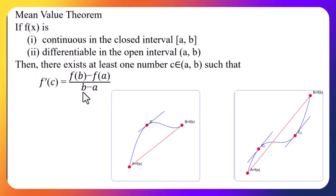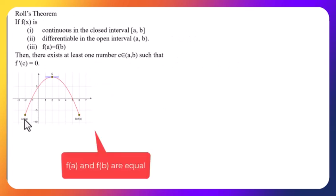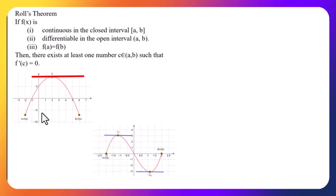Isko khas artha ke ho? a ra b dui point haru chan. Jun interval ma bindu a ra bindu b chan, tyo dui point haru ko bich ma tesma arko ek point c pani chan, jasma tangent ko slope, yuh dui bindu join garne line ko slope sanga barabar huncha. Yasto bindu haru yuta, yuta yuta bhanda badi pani bhettna sakchha.